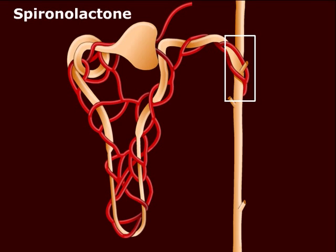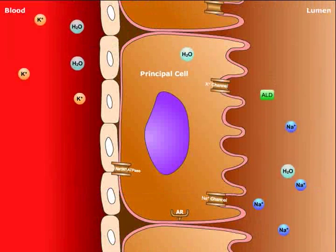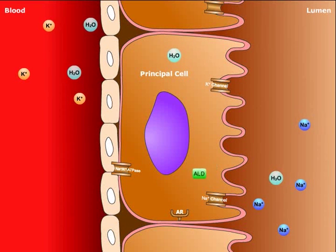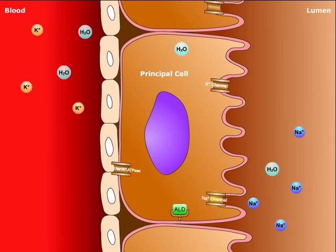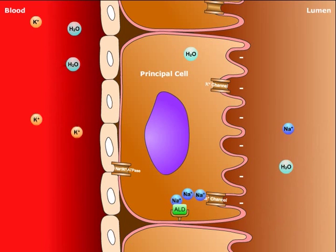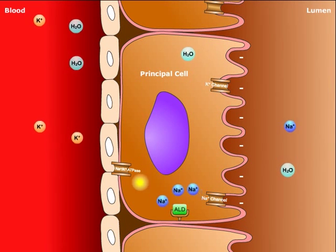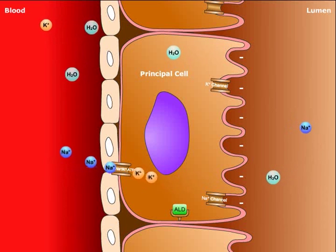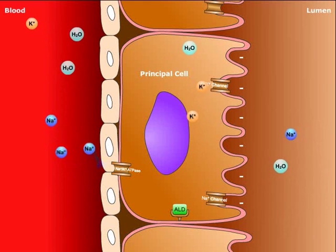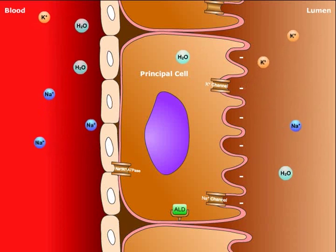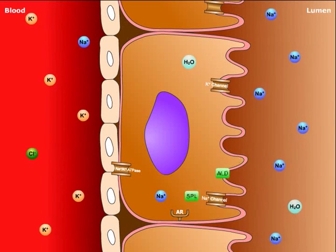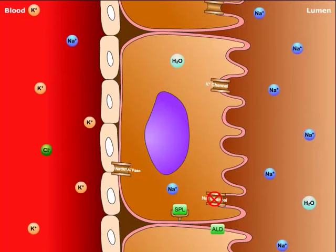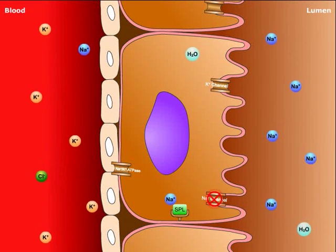Let's take a closer look at the collecting duct. The collecting duct is the main site of action for aldosterone. Aldosterone, labeled here as ALD, will enter the cell and bind with its receptor, labeled as AR. The major effects of aldosterone are stimulating epithelial sodium channels, thus increasing sodium reabsorption and creating a negative electrical potential within the lumen. Aldosterone also stimulates sodium-potassium ATPase pumps, allowing sodium to enter into the blood and potassium into the cell. Due to the negative electrical potential within the lumen, potassium is secreted through ungated channels. Spironolactone, labeled here as SPL, is a potassium-sparing agent that blocks the aldosterone receptor, inhibiting its effects. This will decrease sodium reabsorption and thus prevent the loss of potassium.